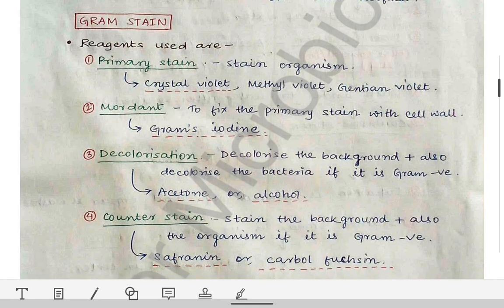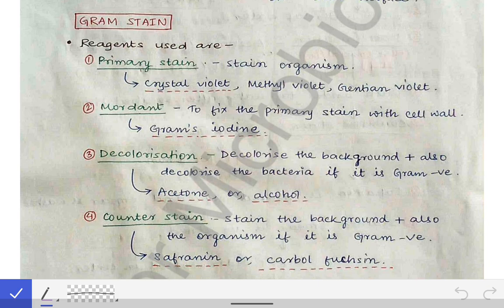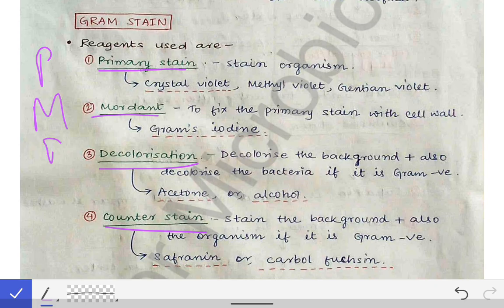We will read the Gram stain extensively. In the Gram stain there are four steps, or rather four reagents used sequentially. Those four are: the primary stain, the mordant, the decolorization, and the counter stain. You can remember these with the mnemonic PMDC.